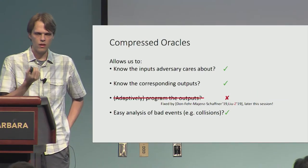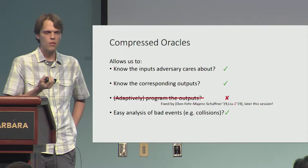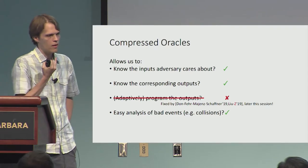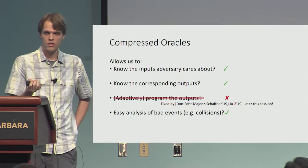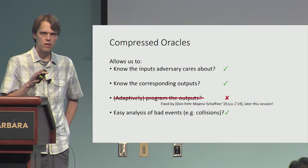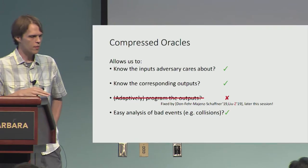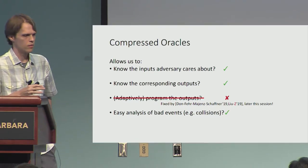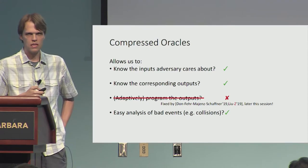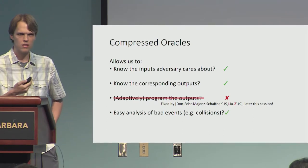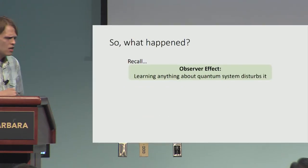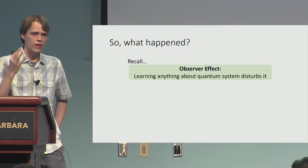I call these things compressed oracles, and they solve a lot of the problems with traditional approaches for the quantum random oracle. It allows us to know what inputs the adversary cares about — they're just the x-columns of our database — and we know the corresponding outputs in the y-columns. This approach doesn't yet let you do any programming, but in subsequent work we actually show how to program. Also, it turns out you can easily analyze bad events like collisions — it's much harder than classically, still, but easier than it was before.